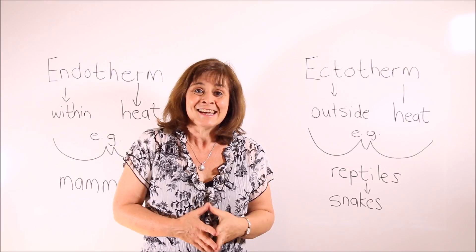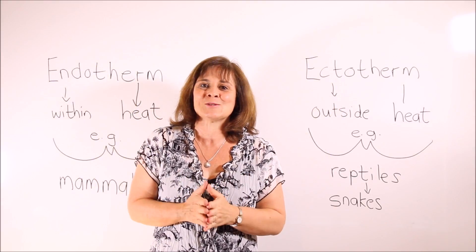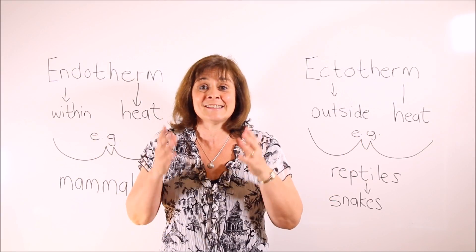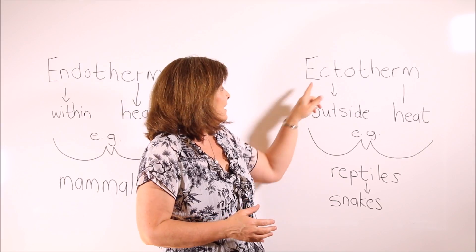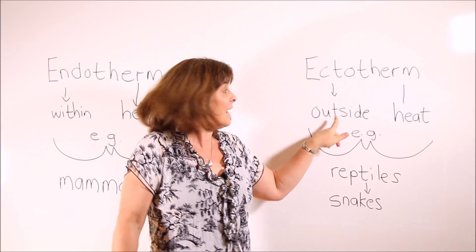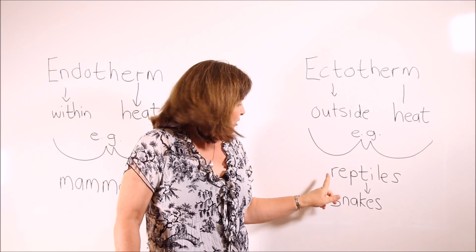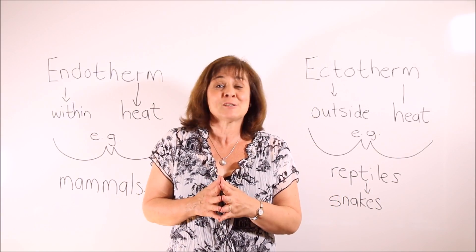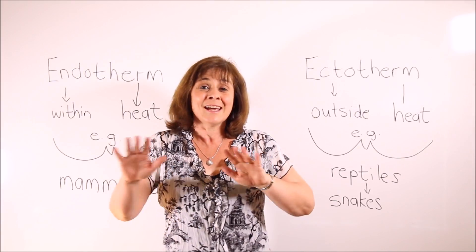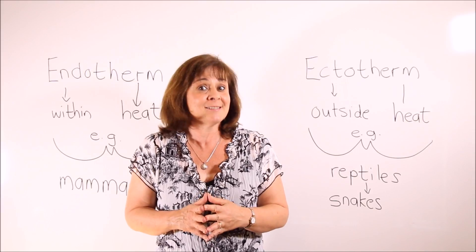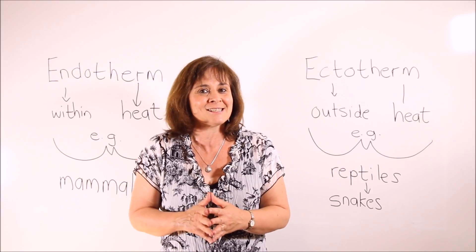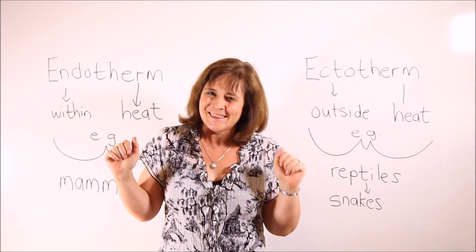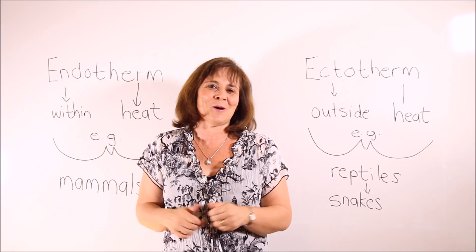Ectotherms, on the other hand, need outside sources of energy to generate body heat. In most cases they need the sun's energy to generate body heat, so 'ecto' means outside and 'therm' means heat. A good example would be reptiles. That is why snakes are much more active in summer — that's when you should watch out. In winter if you walk in the bush it's okay, but in summer you watch out for snakes because they soak up all that energy from the sun, become active, and there's a bit of danger for humans who stumble upon them.